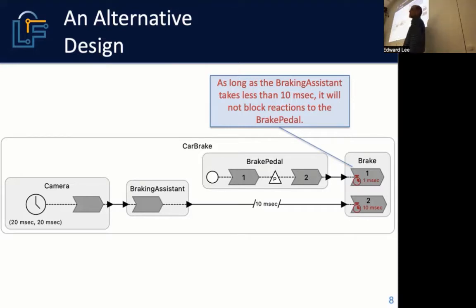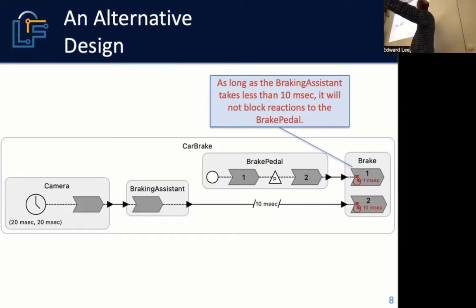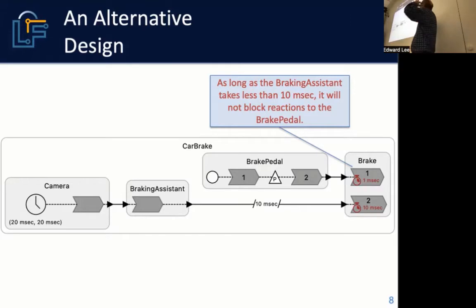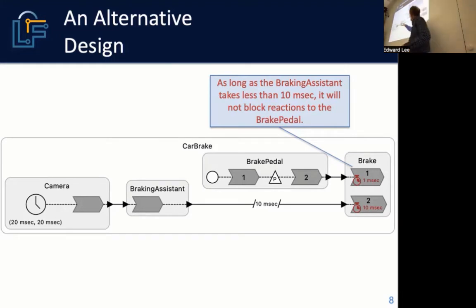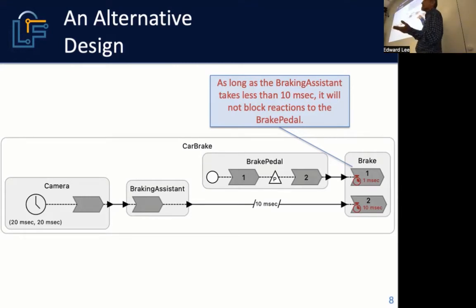The braking assistant result has its timestamp augmented by 10 milliseconds, which means you can process the brake pedal event before you process the braking assistant event — in fact, you must. You've got a whole 10-millisecond window to go ahead and process the brake pedal event. Even if the two events end up simultaneous, you'll process the brake pedal first.